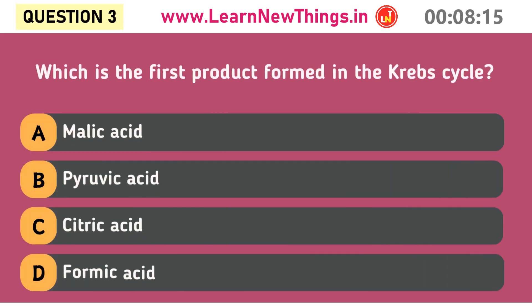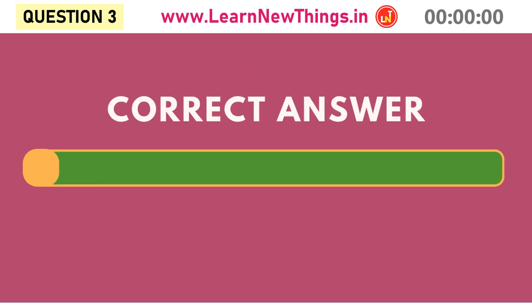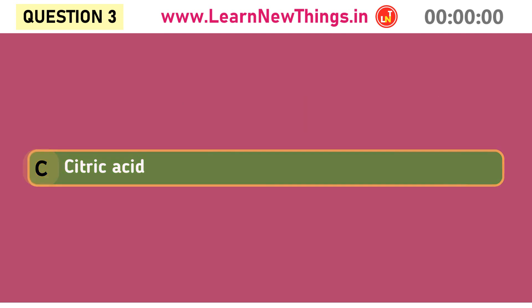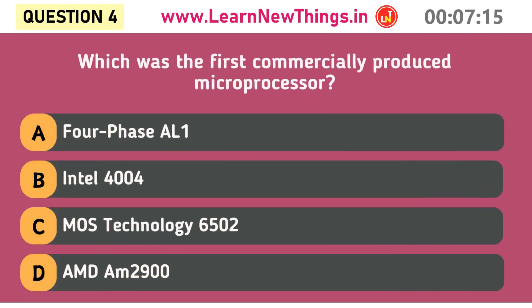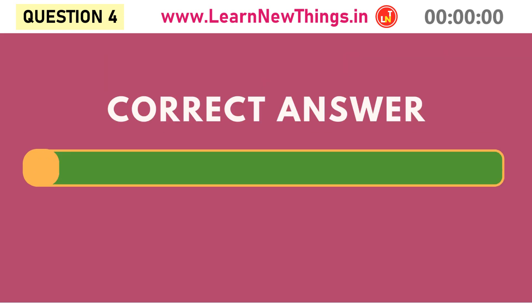Which is the first product formed in the Krebs cycle? Citric acid. Which was the first commercially produced microprocessor? Intel 4004.